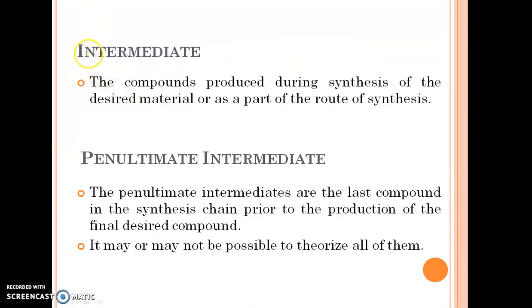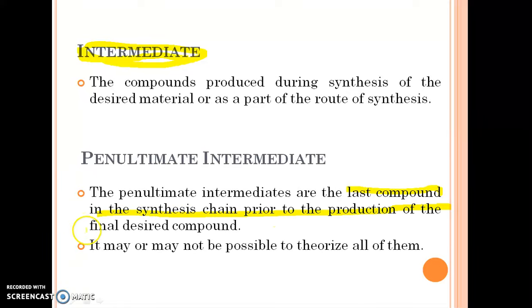The first term is intermediate — compounds produced during synthesis of a desired material, or as part of the route of synthesis, are termed intermediate products. Penultimate intermediate products are the last compound in the synthesis chain prior to the production of the final desired compound — that is, the compound immediately before the final compound. It may or may not be possible to theorize all of them.